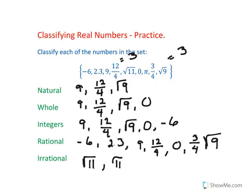And remember, your numbers are either rational or irrational. So let's count and make sure that we have every number accounted for. 1, 2, 3, 4, 5, 6, 7, 8, 9. Every number has been put in a classification. Alright.